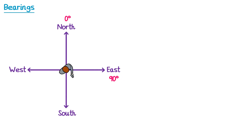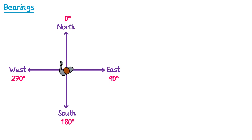If we then continue turning through another quarter of a turn, we've done one half of a turn in total. One half of a turn is 180 degrees. If we then continue turning till we face west, we've done three quarters of a turn, and that's 270 degrees. And then we can do one final quarter of a turn and we'd be facing north again.